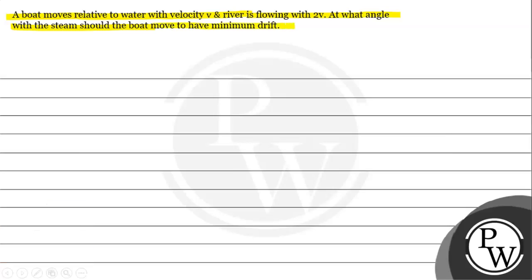Basically, in this question we need to understand the concept of relative motion in two dimensions. There are various cases for relative motion in two dimensions — the river-man problem, river-boat problem, air-wind problem, etc. The concept is the same for all, so we will discuss a generalized case here.